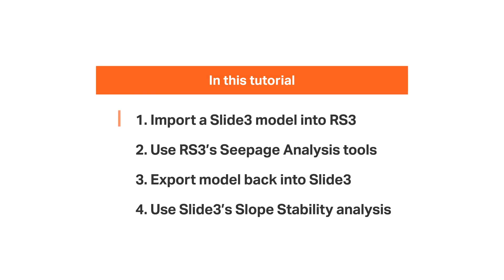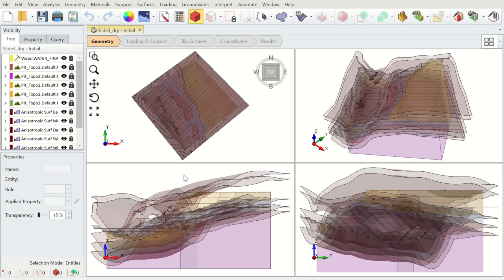In this example, we'll be importing a Slide3 model into RS3 and using its advanced seepage analysis tools to create a surface representing the water table. After we calculate the results, we'll export this back into Slide3 to perform a slope stability analysis. For this tutorial, we'll use a constructed Slide3 model with dry slope conditions as a starting point. You can find a copy of this starting file in your RS3 tutorial folder, or you can download it from the link in the description below.